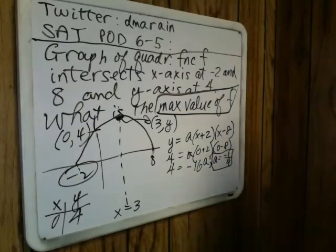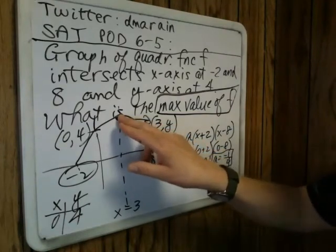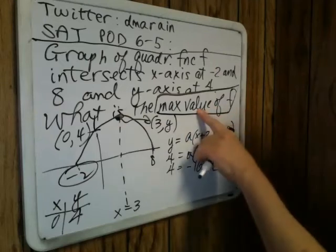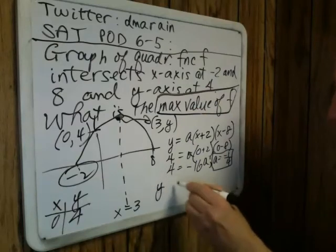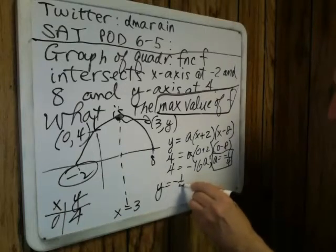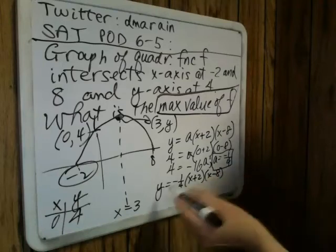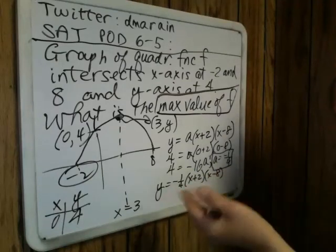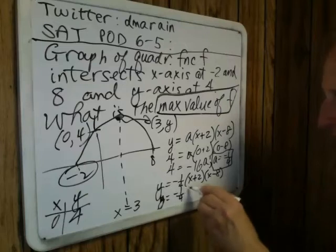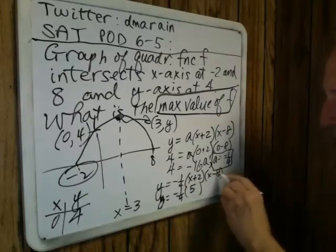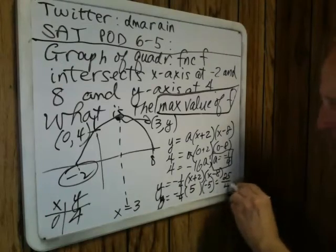We're almost home now. To get the y-coordinate of the maximum point — the turning point, the vertex, whatever you want to call it — the maximum value of the function — we go back to our equation. We know that y equals a times (x + 2) times (x − 8). No reason to FOIL that out. We substitute 3 for x: y equals negative one-fourth times (3 + 2) times (3 − 8), which is negative 5. And there's our result: 25 fourths.